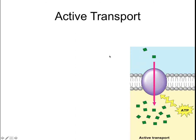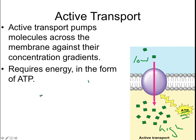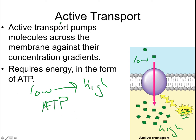Active transport, on the other hand, pumps molecules across the membrane against their concentration gradient. Here we see an area of low concentration and an area of high concentration, and we're going from low to high — the opposite of what we've been talking about. You can see ATP is used here, so we're using energy to go against the concentration gradient — from low concentration to high concentration. This requires energy in the form of ATP.